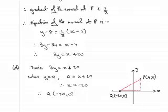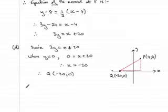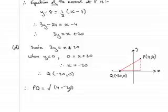So therefore PQ will equal square root of the difference between the x-coordinates. The difference between them will be 4 minus minus 20, so that comes to 24. That's the length across here.